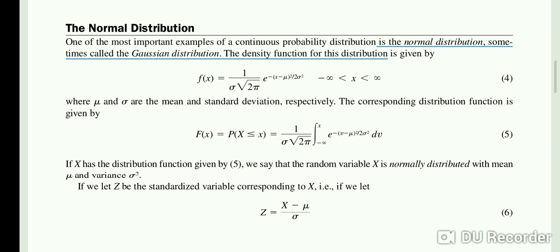Here, the value of x can be from minus infinity to infinity. Where μ and σ are the mean and standard deviation respectively. The corresponding distribution function is F(x) equals P(X ≤ x) equals 1 over sigma square root 2π, integration from minus infinity to x, e to the power minus (v minus μ) squared over 2σ squared dv. This is equation number 5, which represents the distribution function.